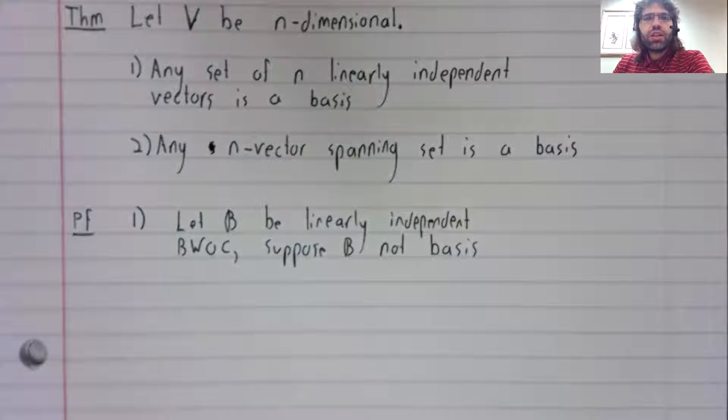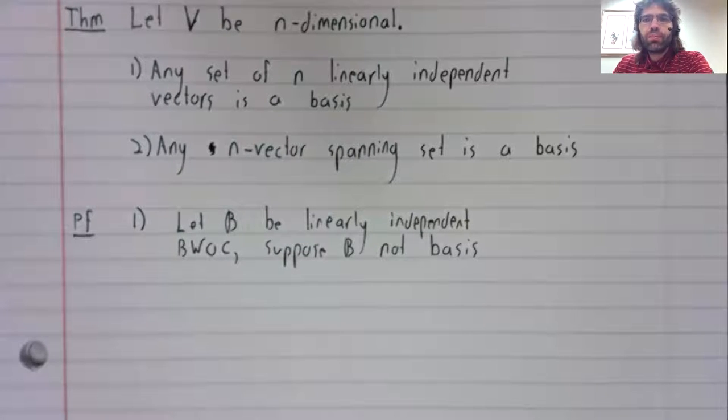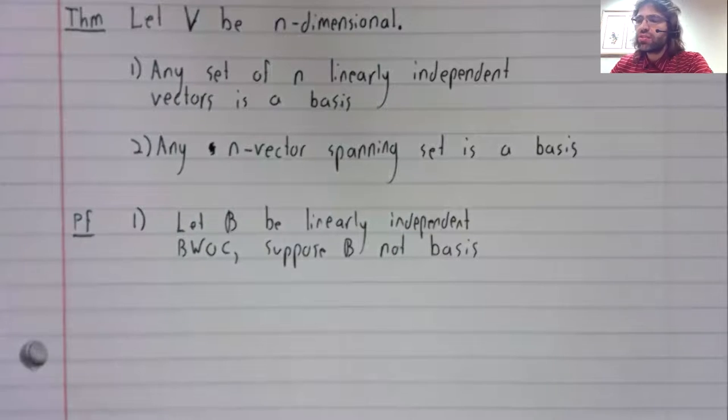B is a linearly independent set. By a previous theorem, add vectors to B until it is a basis.